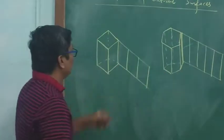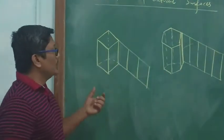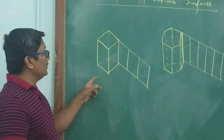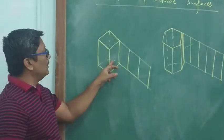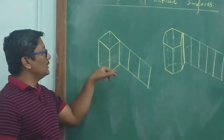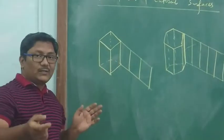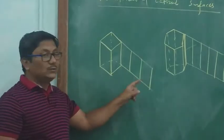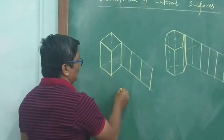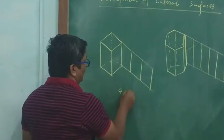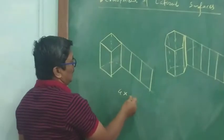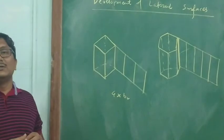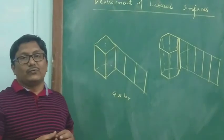Same way, if you see the perimeter of the base surface — here, if you consider, we are opening the base surface — 1, 2, 3, 4 — the perimeter is 4 times the base length of the square prism. So we can see the development here.